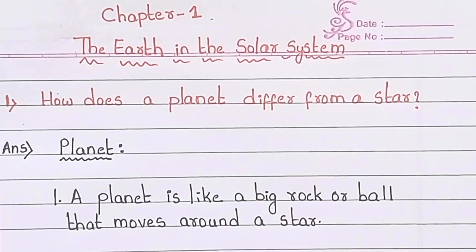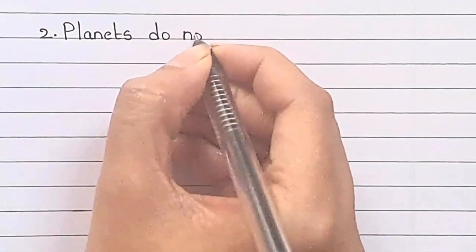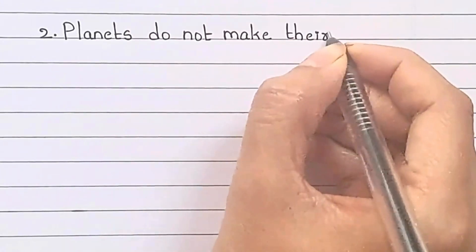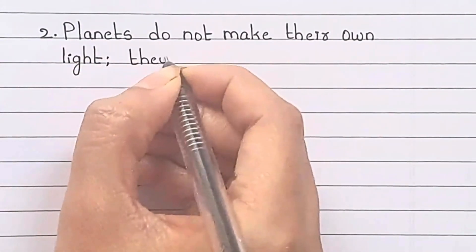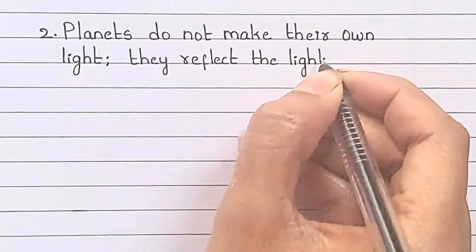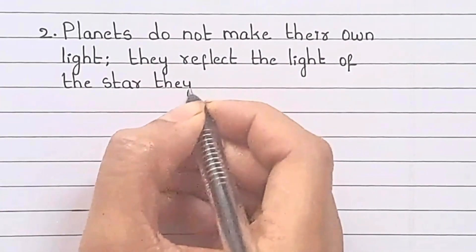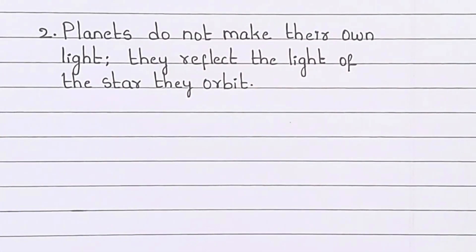A planet is like a big rock or ball that moves around a star. Planets do not make their own light; they reflect the light of the star they orbit.